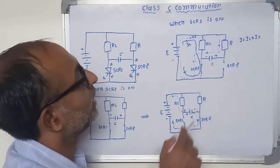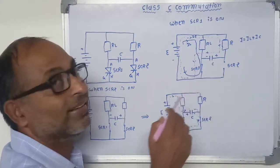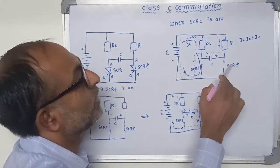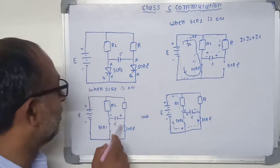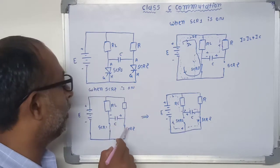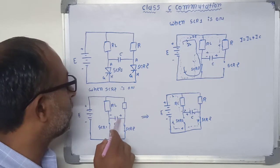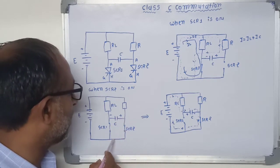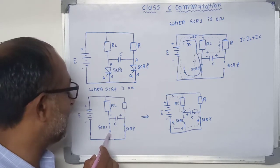Now if I want to turn off this SCR1, that time SCR2 is triggered by applying gate pulse. So now as shown in this figure, when we are giving trigger impulse to the SCR and it is turned on, the positive plate of capacitor is connected to the cathode terminal of SCR1 or main SCR.